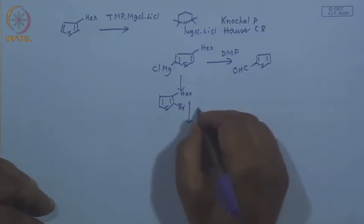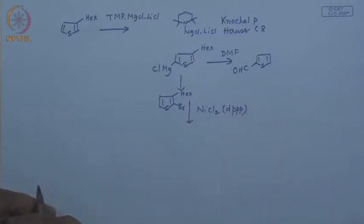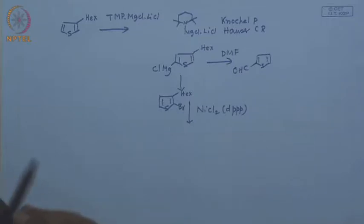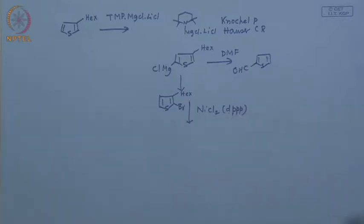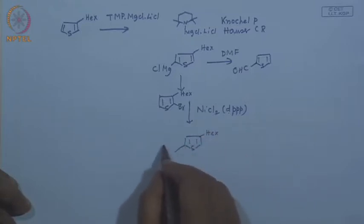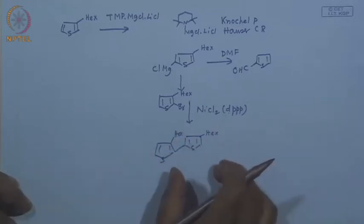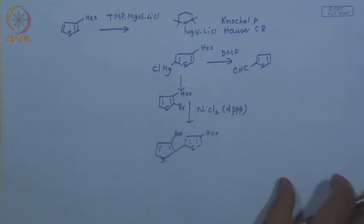In this case, the reagent used is NiCl2·dppf — nickel chloride with dppf ligand. The result is a coupled product with the hexyl group. You get an advanced monomer that can then be polymerized.